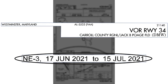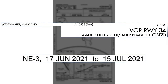From the sides of the margin identifier are the volume identifier — Northeast 3 — and then the dates of effectiveness. This approach plate is effective from the 17th of June 2021 up to the 15th of July 2021. They get updated every 28 days.